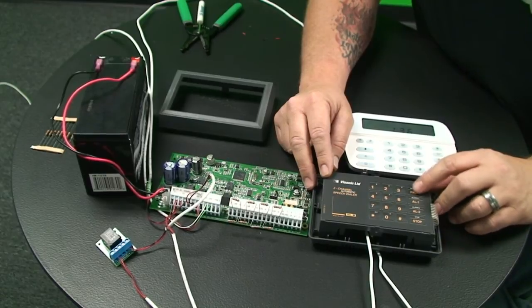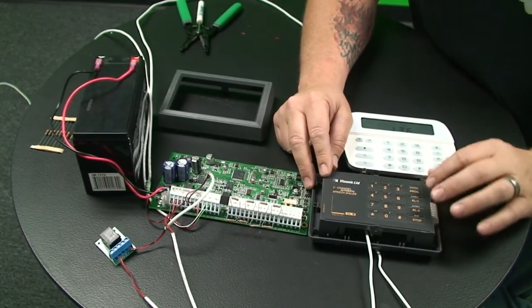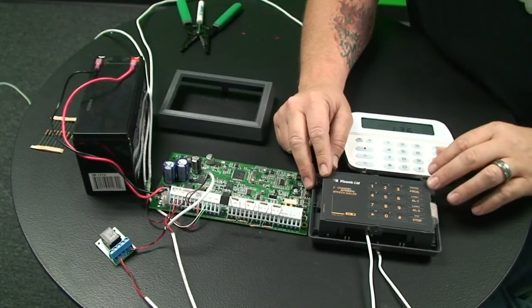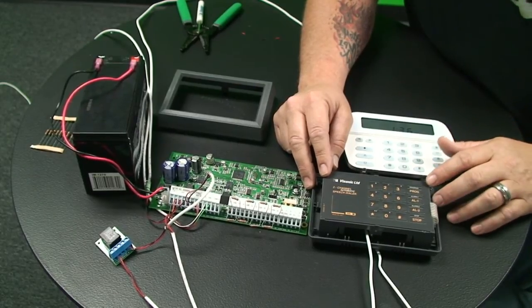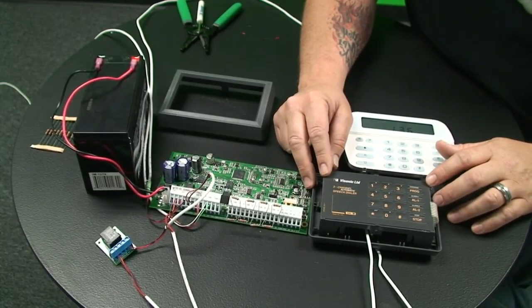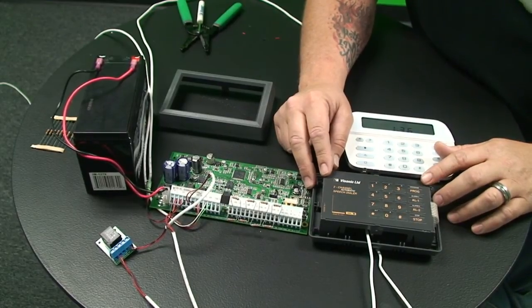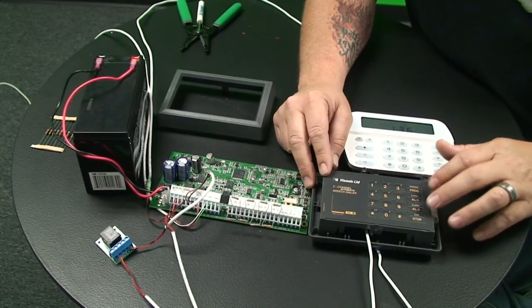So this is very simple to do. So all we're going to do is we press the program button, and then we'll press the location that we want to program. So 1, 2, 3, and 4 are for phone numbers 1, 2, 3, and 4. Locations 5, 6, 7, and 8 are for channel 2.